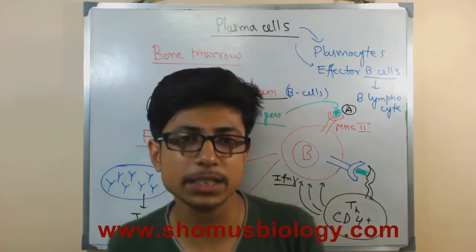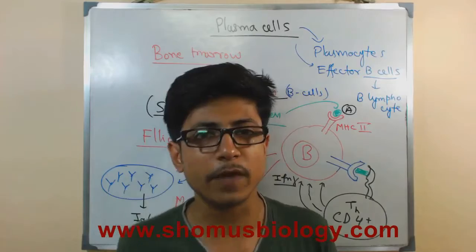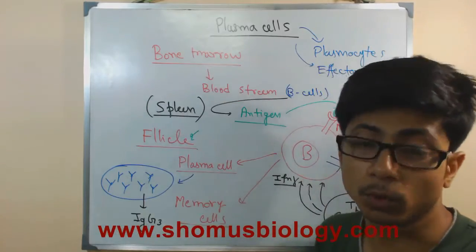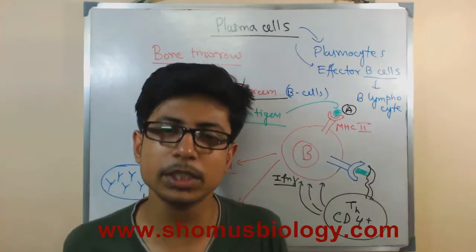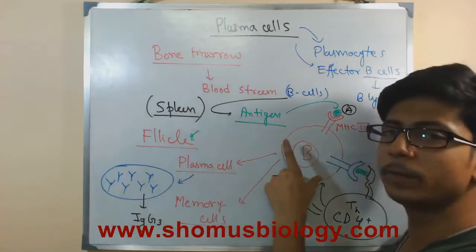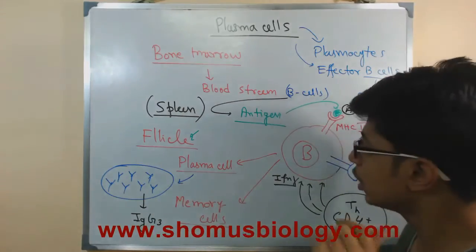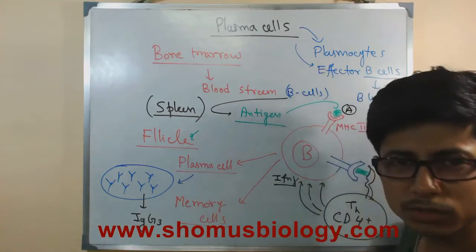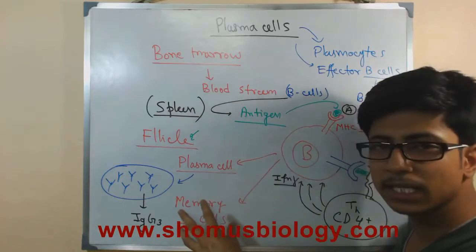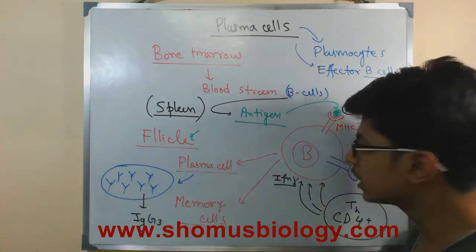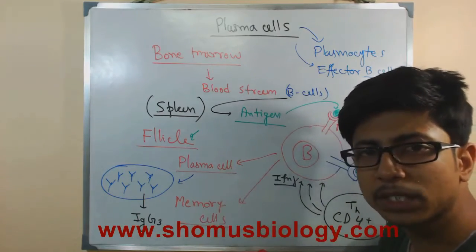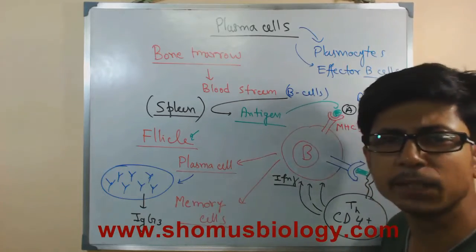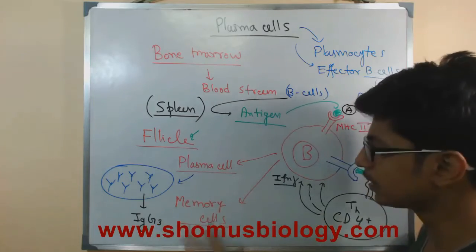Once the cellular mode has acted, the humoral mode begins. If cellular mode is sufficient to resolve the infection, that's fine. Now, B cells give rise to both plasma cells and memory cells. Memory cells are those B cells that have memorized the signature molecular structure of a particular antigen. Those memory B cells remain small, are not producing antibody, but have a clear picture of what antigen infected. In the future, if that antigen infects again, those memory cells will start producing antibody very, very rapidly.